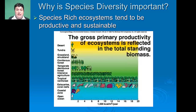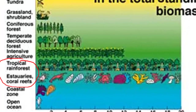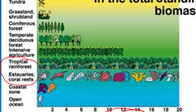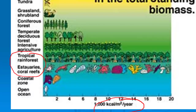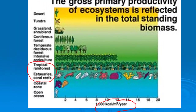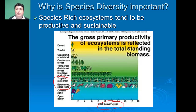Species diversity is really important. Species-rich ecosystems tend to be the most productive and the most sustainable. Looking at tropical rainforests and estuaries — two of the most species-rich environments — they also happen to be the most productive. Additionally, these areas are very sustainable because with the large number of organisms present, if there is any kind of disturbance, they are more able to be resilient, with organisms available to fulfill the roles of others if they happen to be lost as a result of that disturbance.